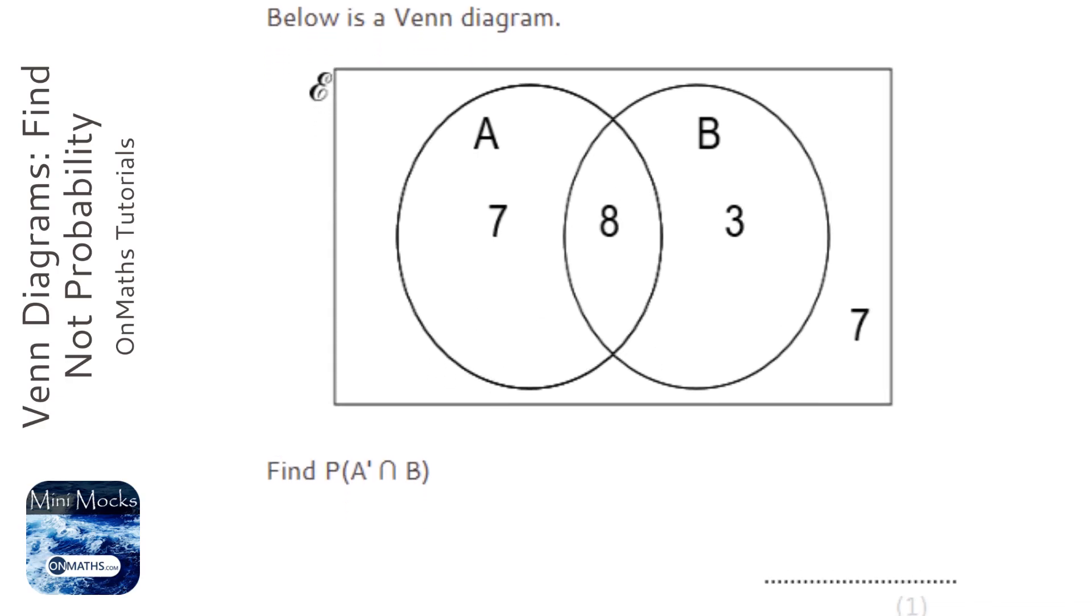Okay, so we're given a Venn diagram and we're asked to find the probability of P(A' ∩ B), which is not A and B.